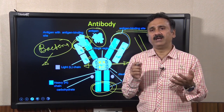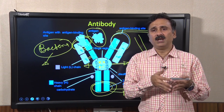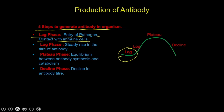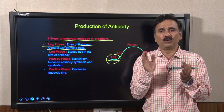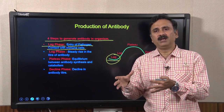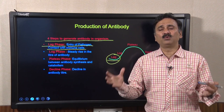This is the main function of antibodies in the immune response. Antibody generation is a four-step process in an organism under natural conditions. The first is the lag phase — also called the preparative phase — where the foreign antigen enters the host body, is contacted by immune cells, recognized, and the preparation begins for how to tackle this foreign antigen.